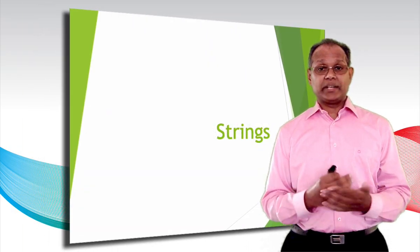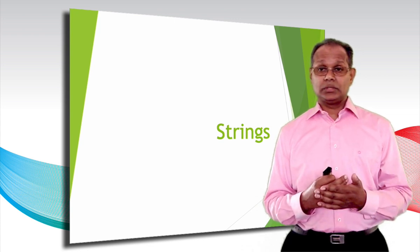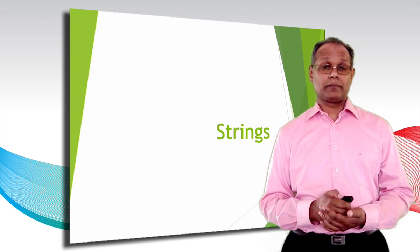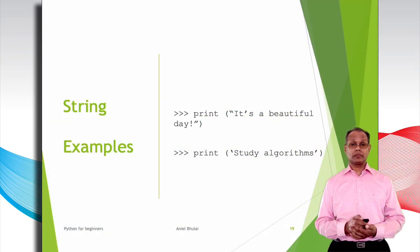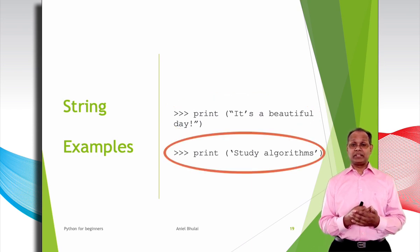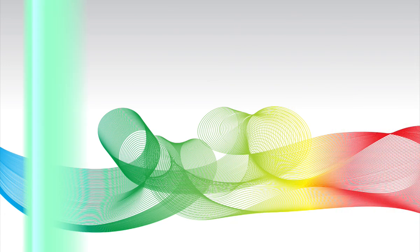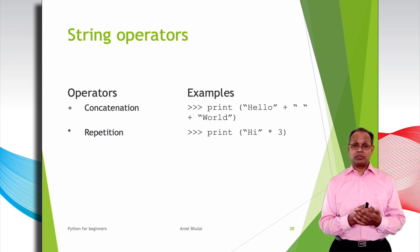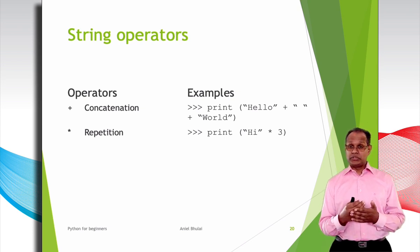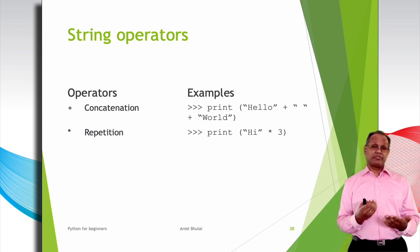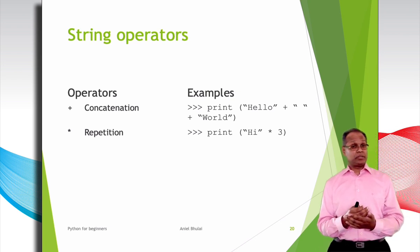A string is a list of characters represented in either double quotes or single quotes. We have two examples of strings: the first example is a string between double quotes, and the second is a string between single quotes. The concatenation string operator concatenates or joins two strings. The repetition string operator repeats the string for a number of times — in this example, 'hi' is repeated three times.